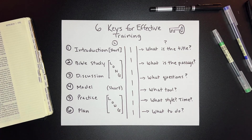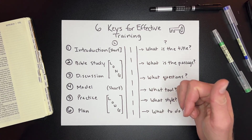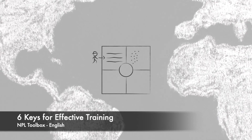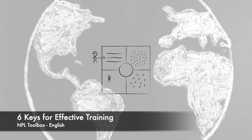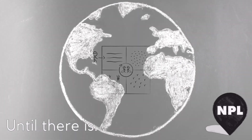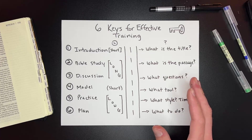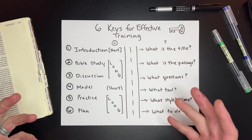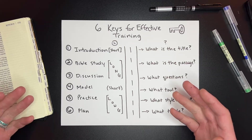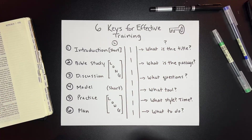In this video, we are going to learn six keys for effective training. For every module or training tool that we are going to roll out to our disciples and those we are training, there are six essential components that we need to have with every single module.